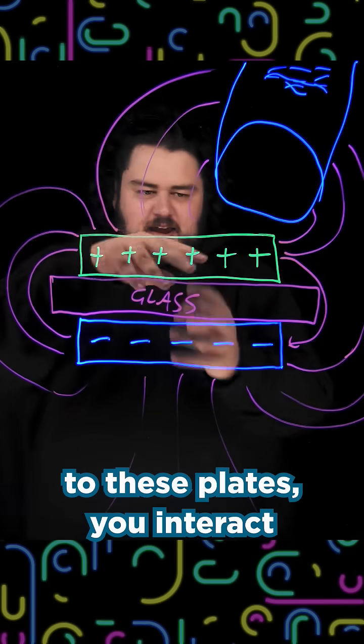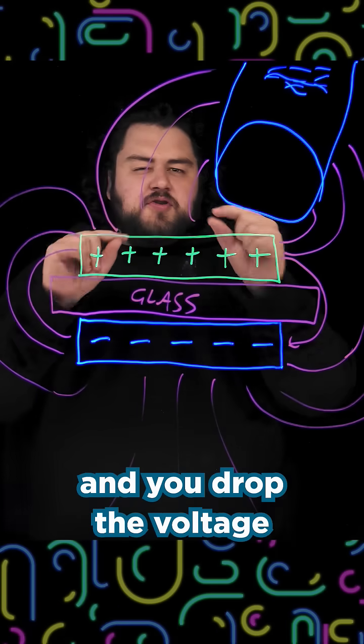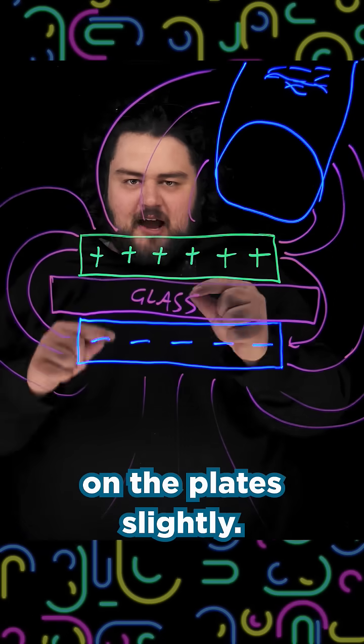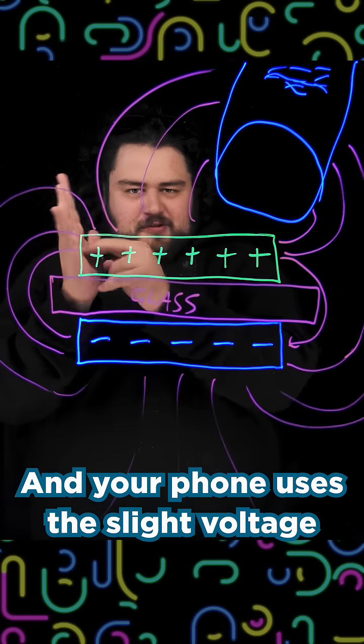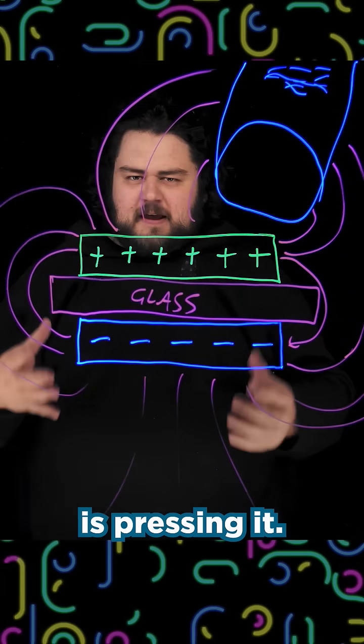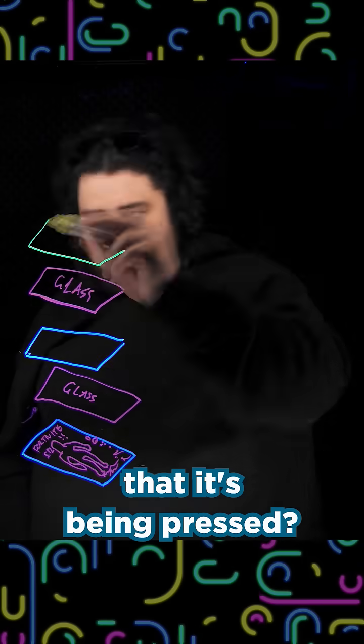If you move your finger close to these plates, you interact with this magnetic field, and you drop the voltage on the plates slightly. Your phone uses this slight voltage drop to know that something is pressing it, but how does it know where on the screen that it's being pressed?